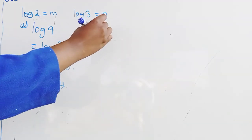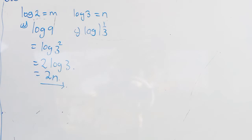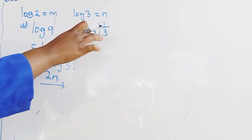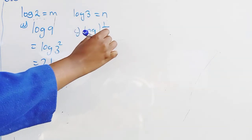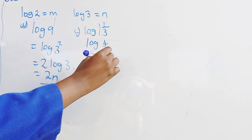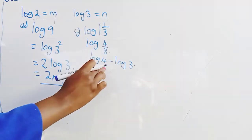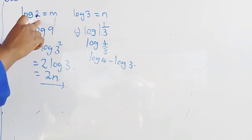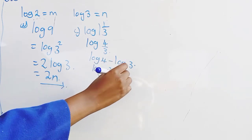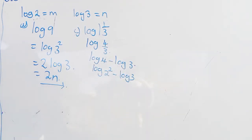Part C asks us to find logarithm of 1 and one-third in terms of m and n. One and one-third as an improper fraction is: 3 times 1 is 3, plus 1 is 4, over 3 — so it becomes logarithm of four-thirds. Logarithm of four-thirds equals log 4 minus logarithm of 3. We can express log 4 as logarithm of 2 to the power 2.